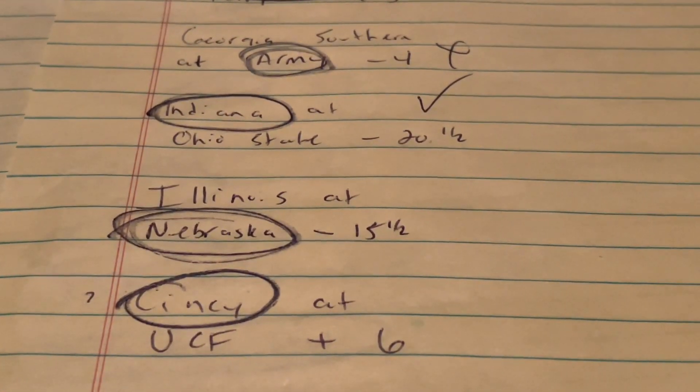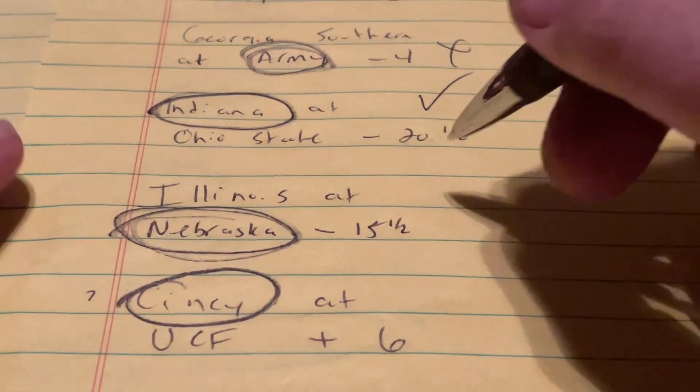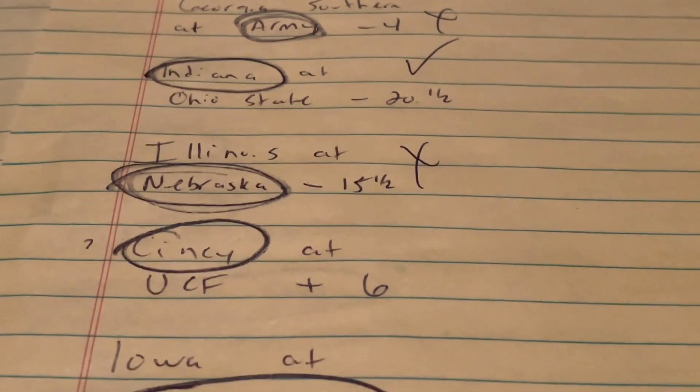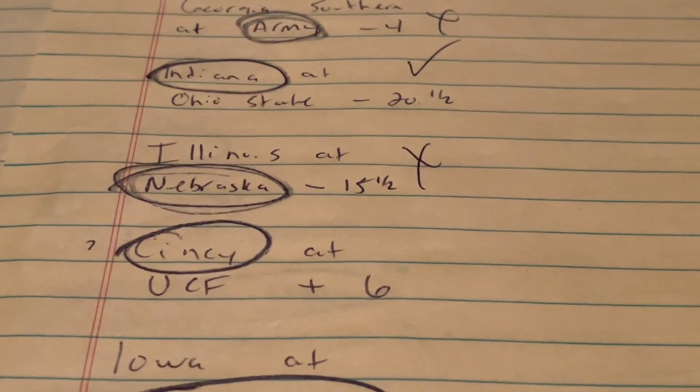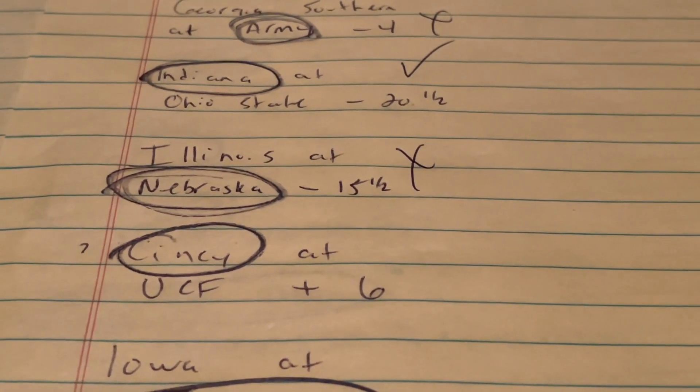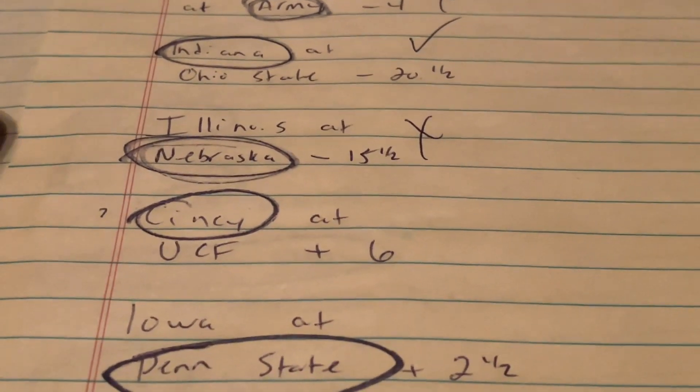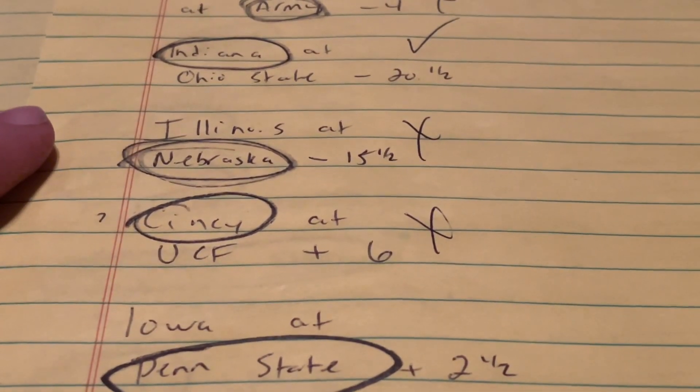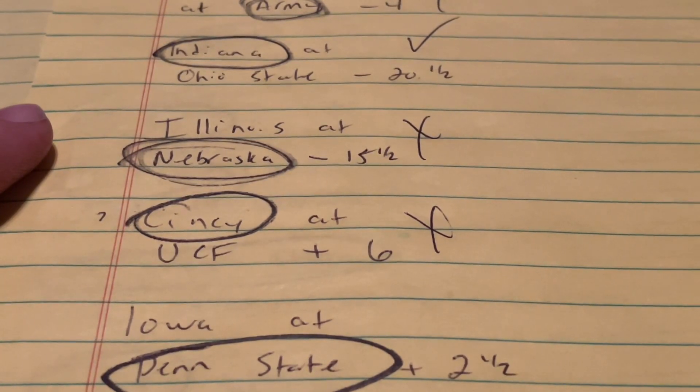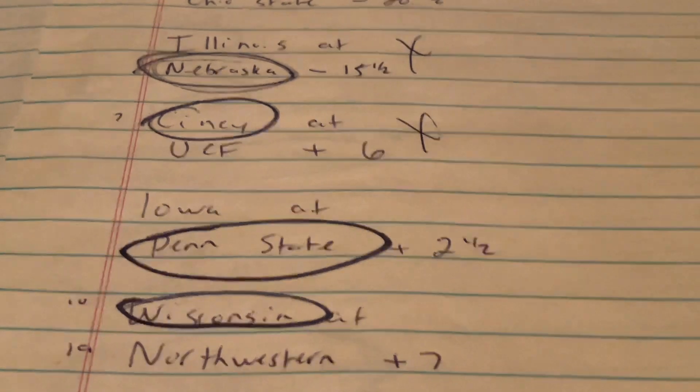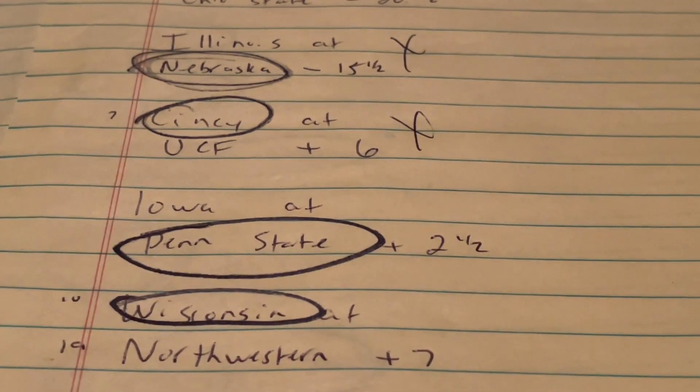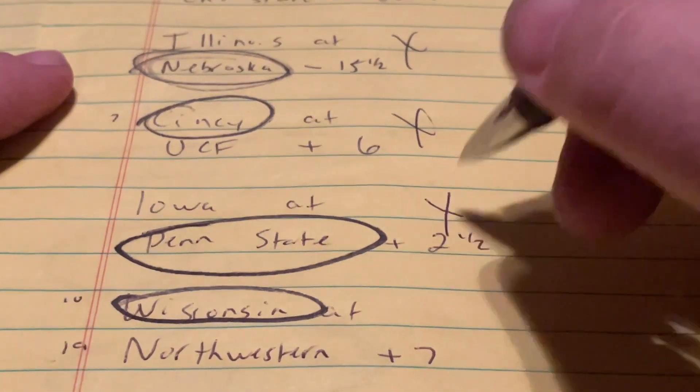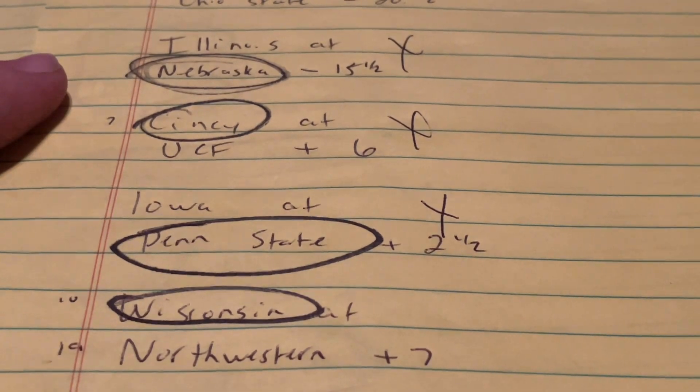Illinois at Nebraska. Nebraska does not cover. They got actually blown out. Well, not blown out, but they got beat 41-23 by Illinois at home. Cincinnati and UCF. Another pick I got wrong there. Cincinnati wins out with 36-33 against UCF. So they didn't cover the six points. Iowa and Penn State. I had Penn State there, and they didn't cover either. They're 0-4. Now they are 0-5. They lost 41-21.